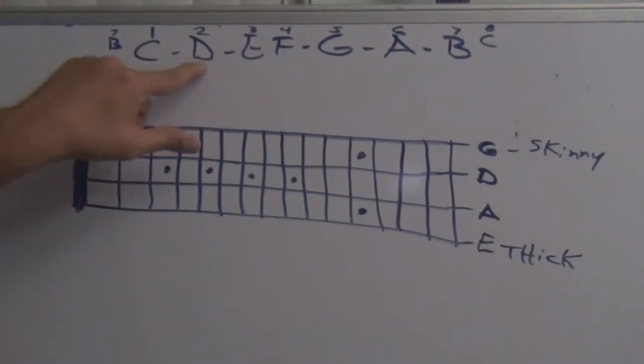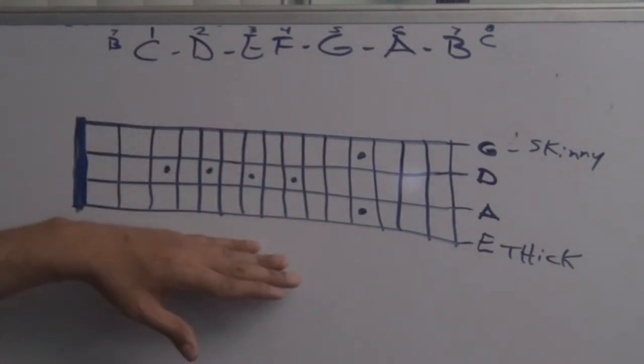So you know from C to D is a whole step because you got a key or a note in the middle, so it's a whole step. From D to E, whole step. E to F, no whole step. This is a half step, you know that.